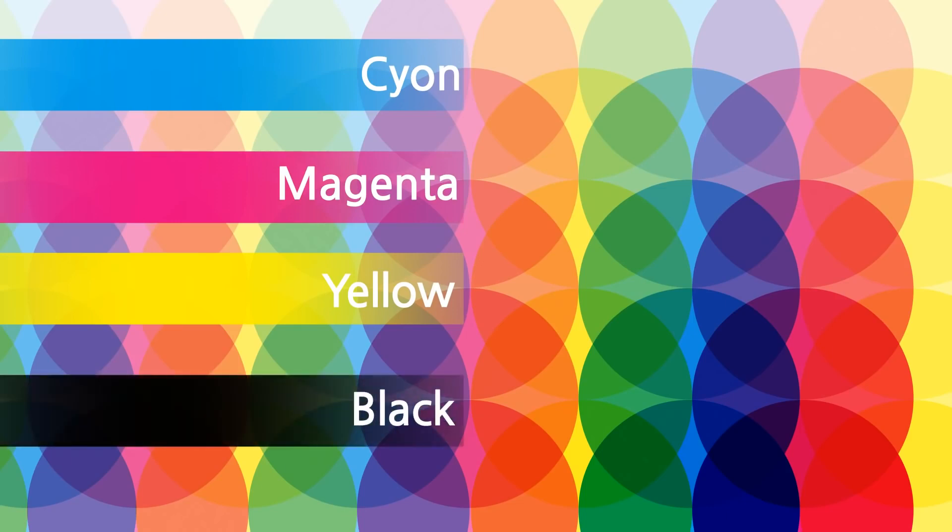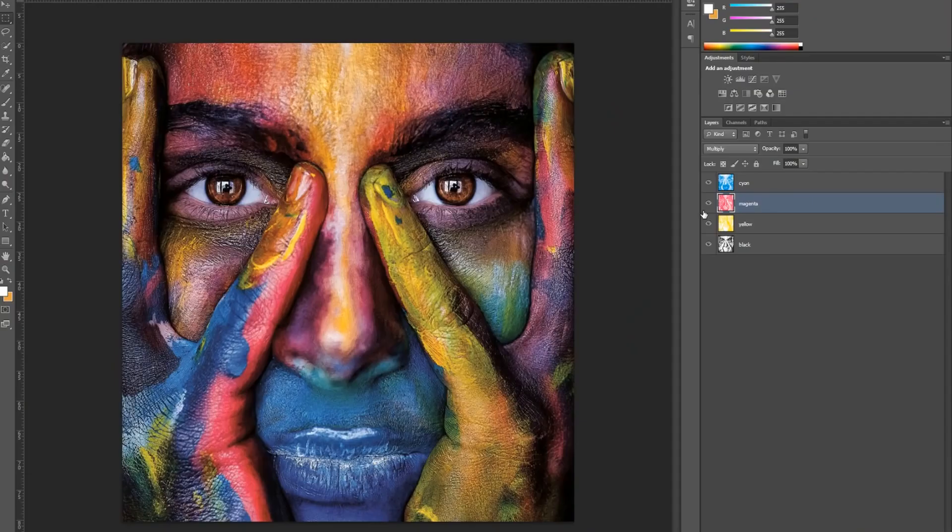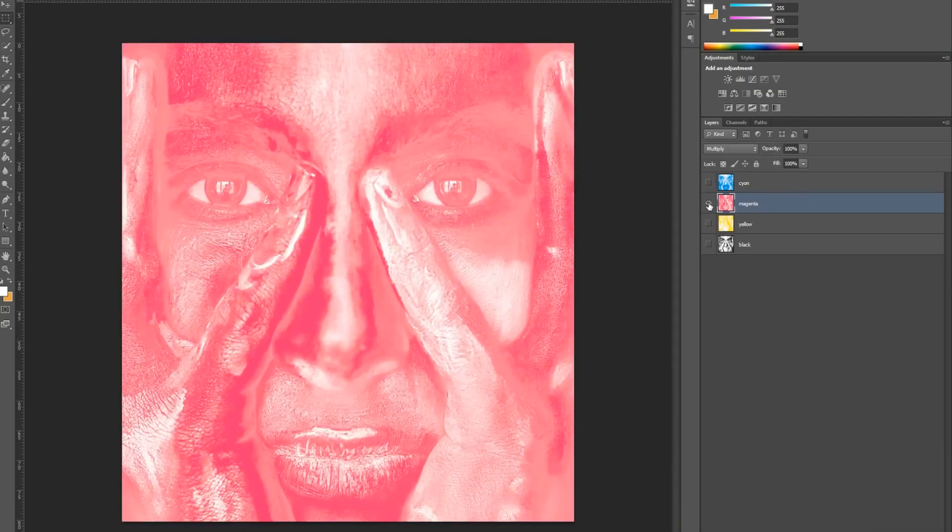Hence, black has been added and came up with CMYK. I've downloaded a photo and divided it into four colors: cyan, magenta, yellow, and black.